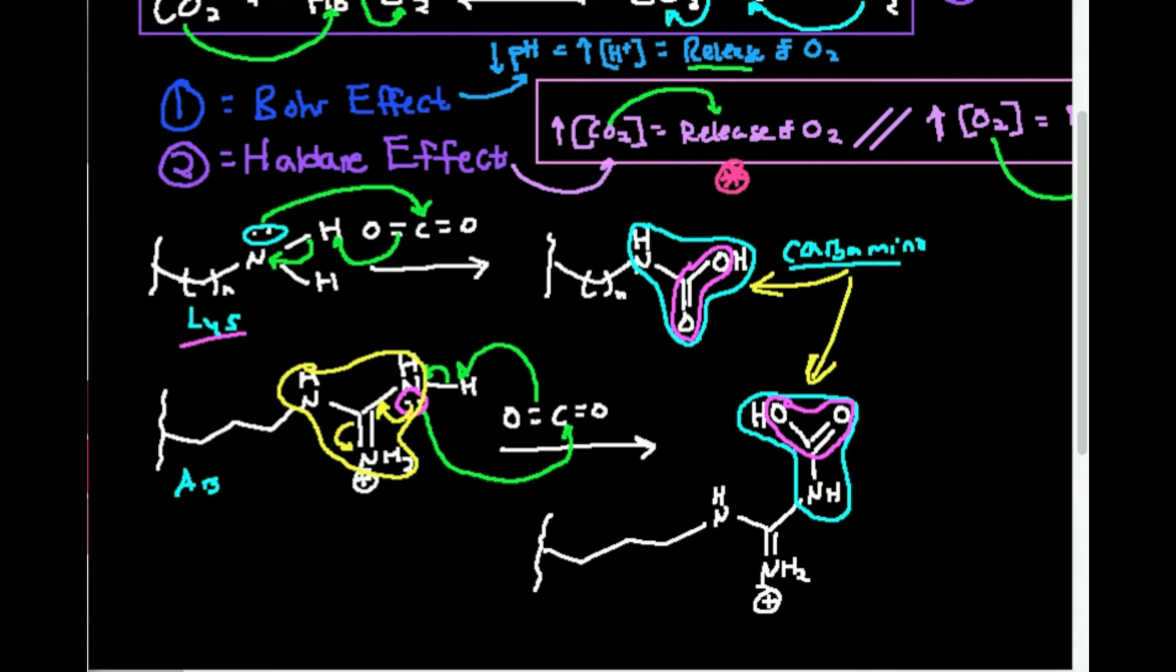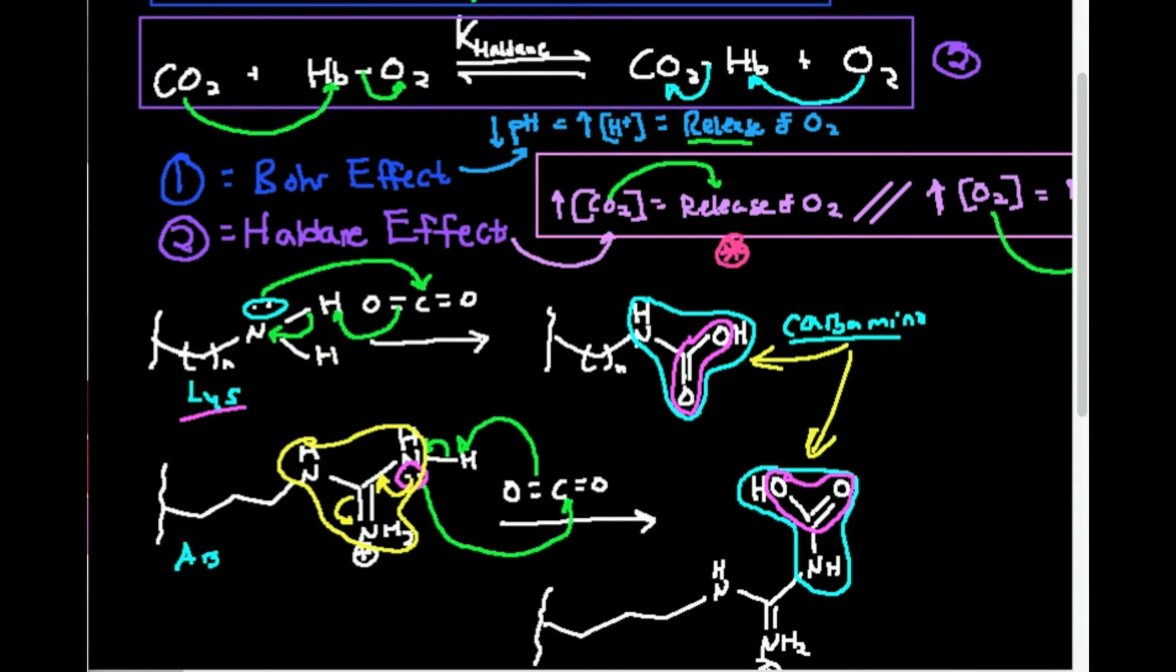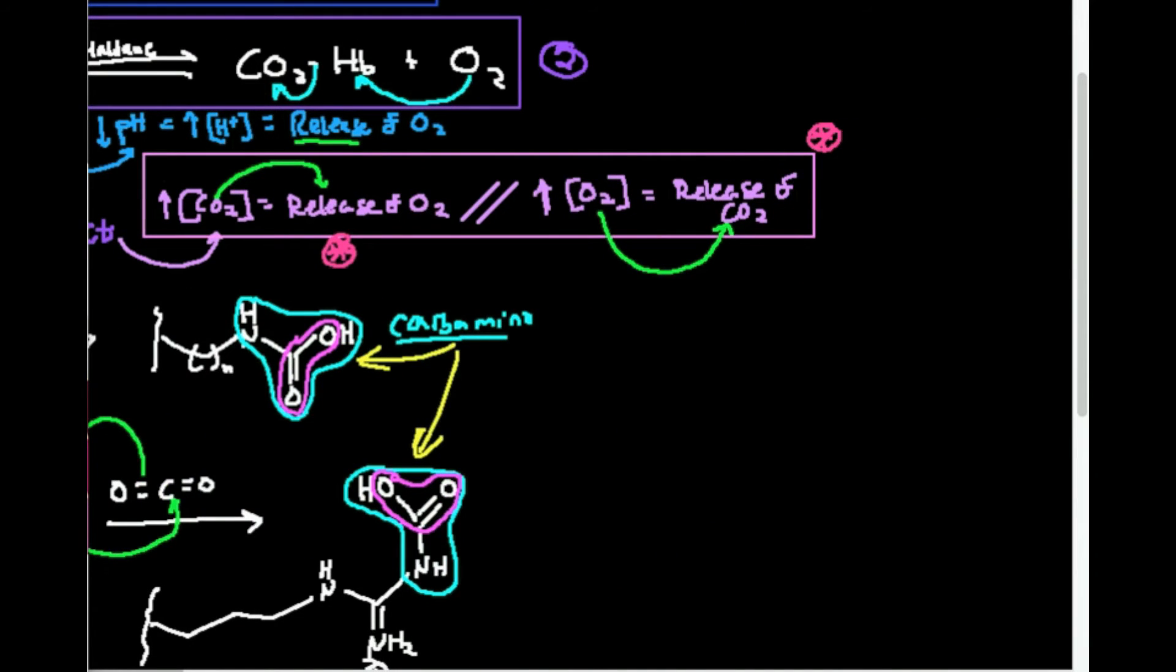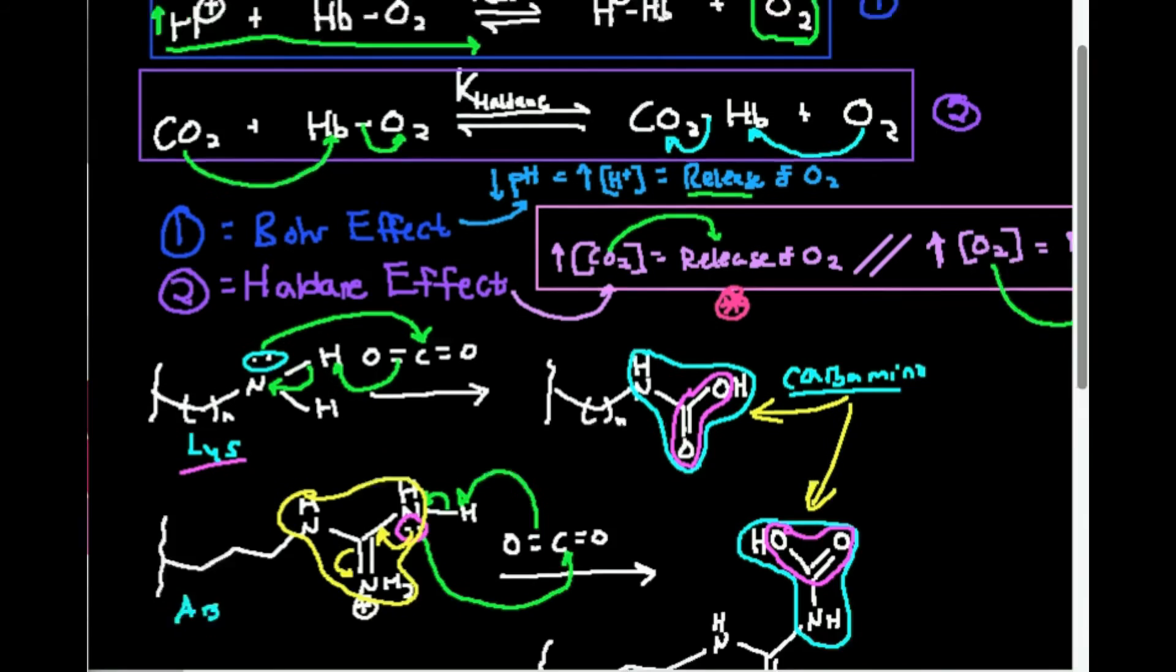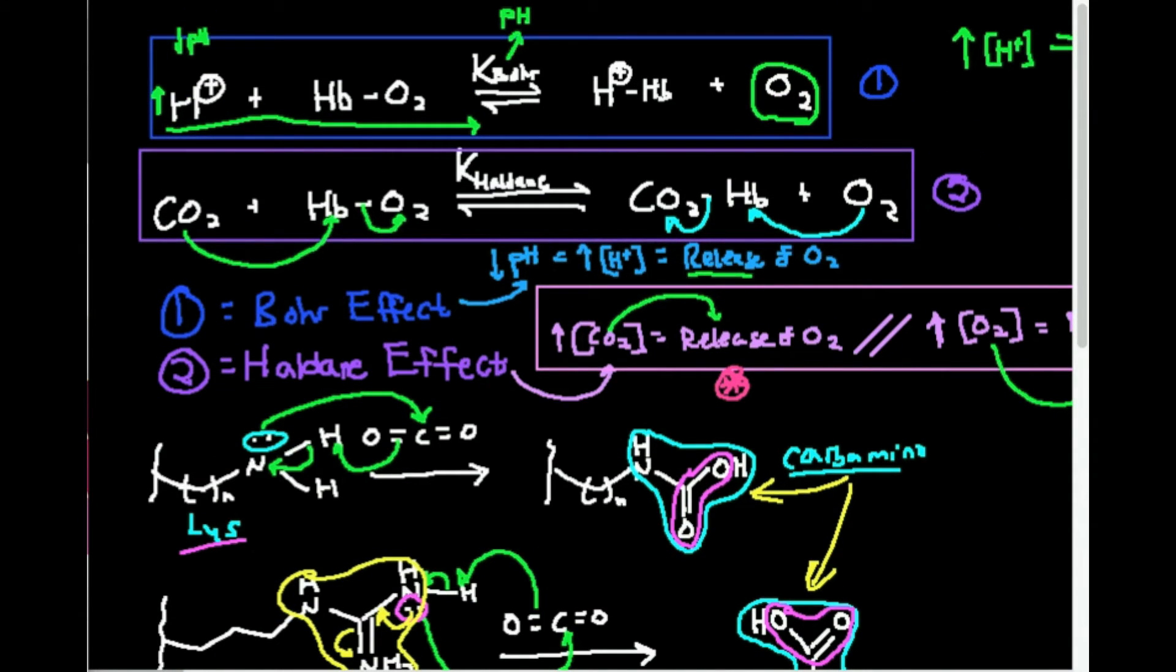And ultimately what we said is the carbon dioxide can cause the release of oxygen, and then also oxygen can cause the release of carbon dioxide. So that's described by this Haldane equation. CO2 binds to hemoglobin, release of oxygen. If I want to go the other way, oxygen binds to hemoglobin, causes dissociation of CO2.